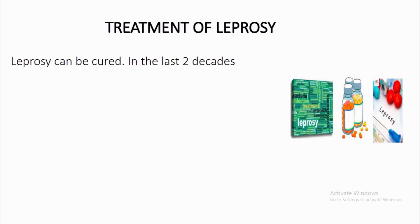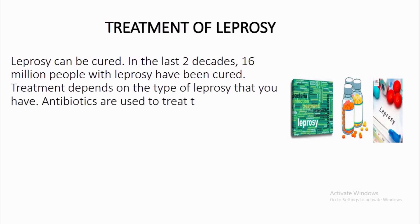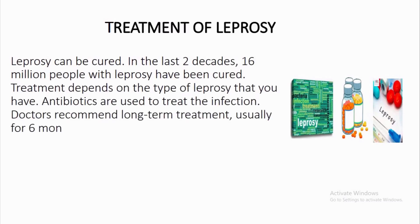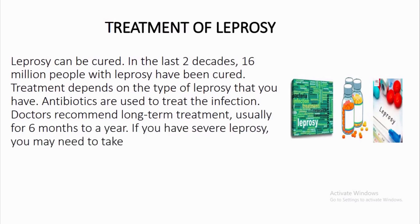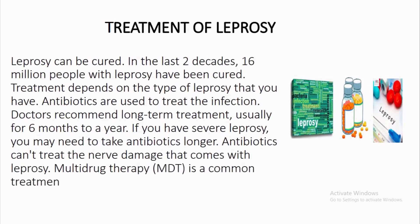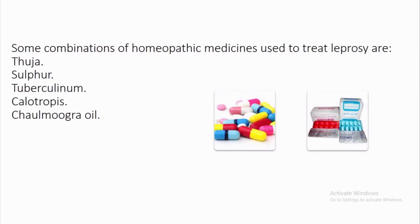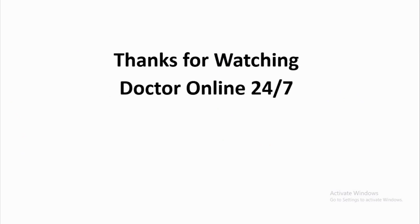Treatment of leprosy. Leprosy can be cured. In the last two decades, 16 million people with leprosy have been cured. Treatment depends on the type of leprosy that you have. Antibiotics are used to treat the infection. Doctors recommend long-term treatment, usually for 6 months to a year. If you have severe leprosy, you may need to take antibiotics longer. Antibiotics can't treat the nerve damage that comes with leprosy. Multidrug therapy (MDT) is a common treatment for leprosy that combines antibiotics. Some homeopathic medicines used to treat leprosy include Thuja, Sulfur, Tuberculinum, Calotropis, Chalmugra oil, Ileize, Hydrocotyle, and Apis. Thanks for watching Dr. Online 24-7 by Dr. Sanaa Bhawani.